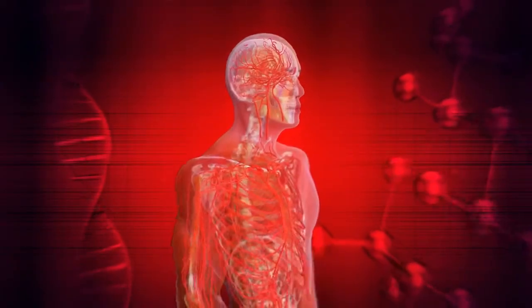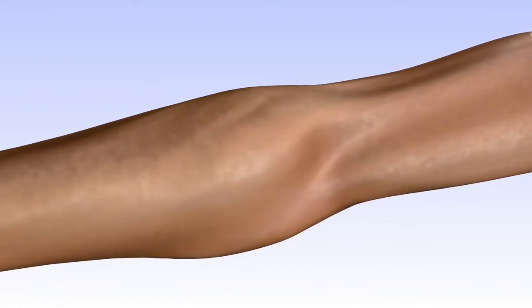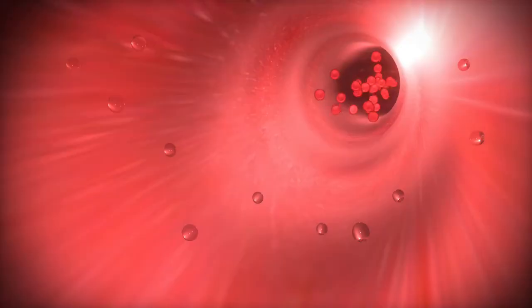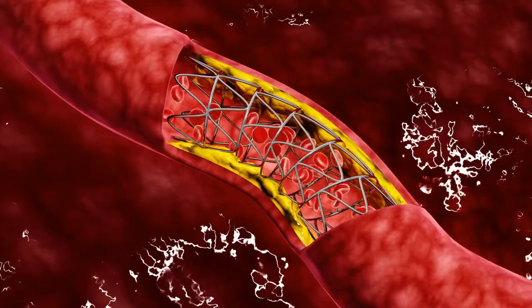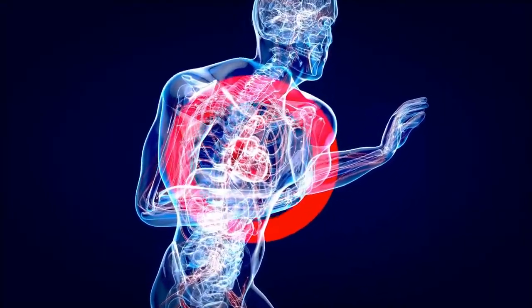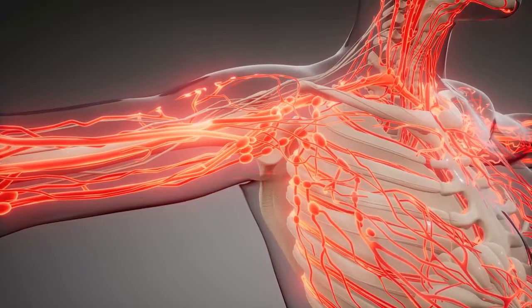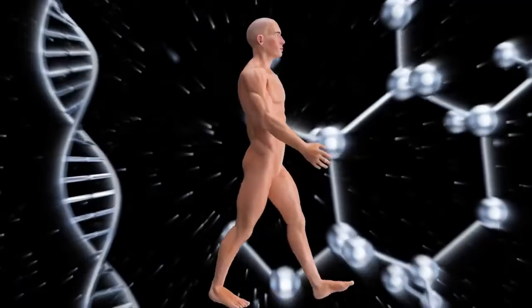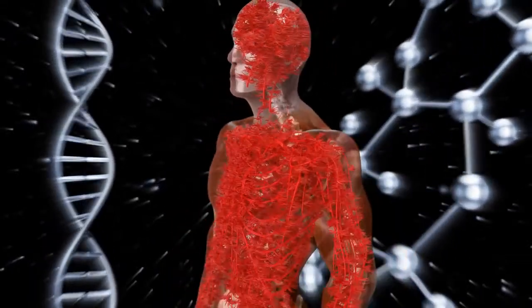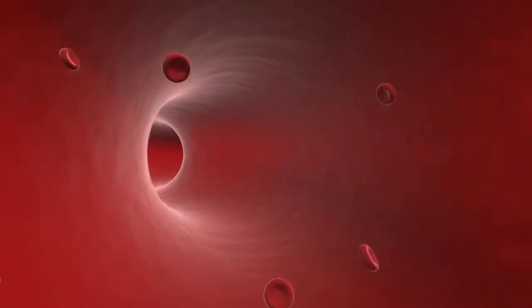Moving on to the circulatory system, which is responsible for transporting oxygen, nutrients, and hormones throughout the body. The heart, blood vessels, and blood work together to keep the circulatory system functioning properly. The heart pumps blood to the lungs to pick up oxygen, and then it pumps it to the rest of the body to deliver nutrients and oxygen.